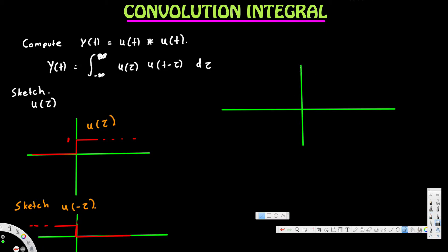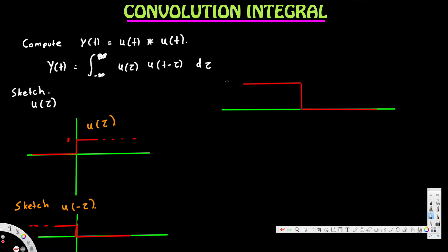u(t minus τ) is the same shape as u(negative τ), but instead of turning on at 0 it turns on at t. We don't know where t is located, so there are two cases we can have. The height is 1, and this graph is u(t minus τ).